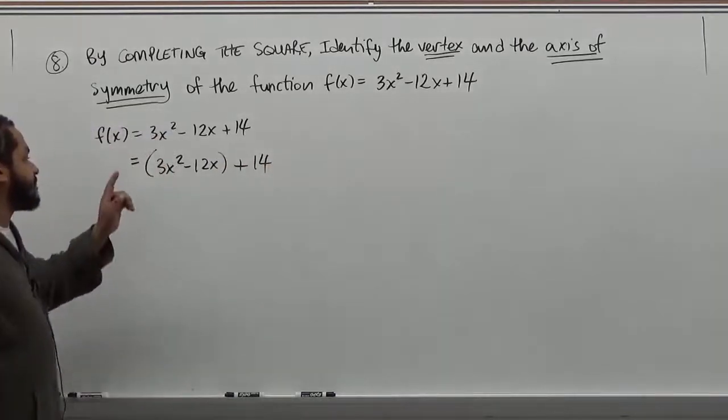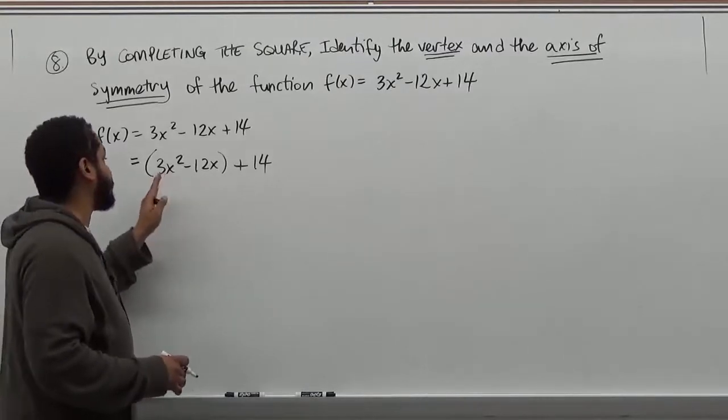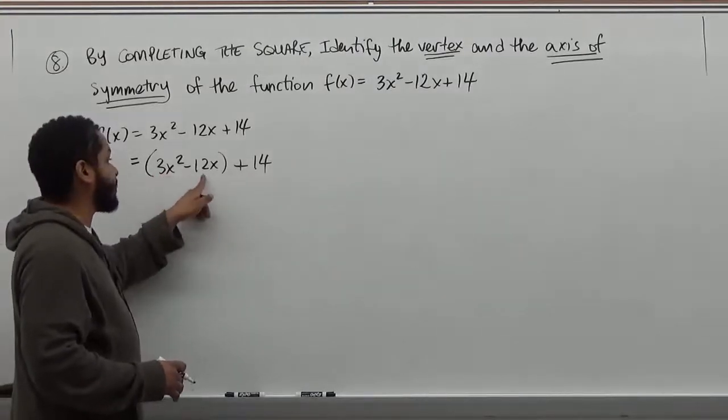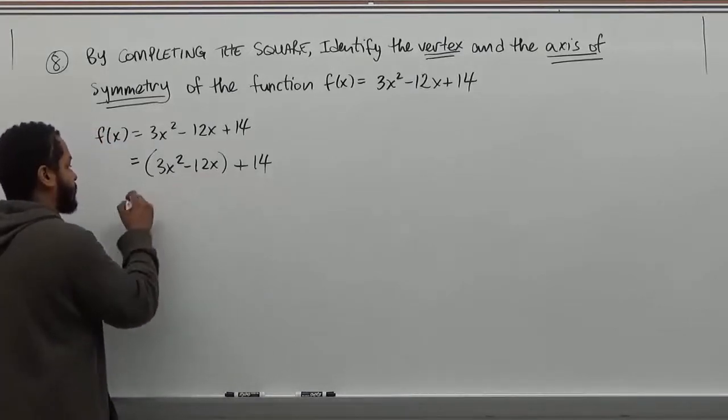The second step is then to get rid of the constant that's next to our x². So we're going to factor out the greatest common factor of the x². We don't care so much what the common factor of the 12x's are. We just want to get this x² to be 1x².